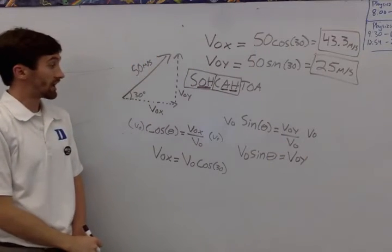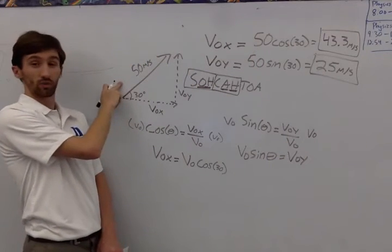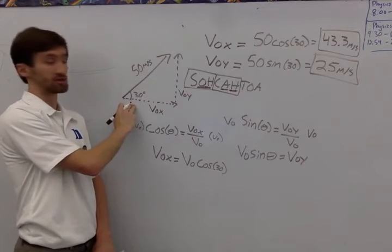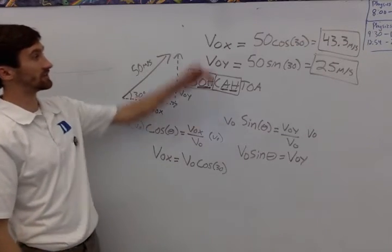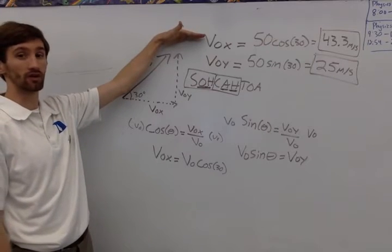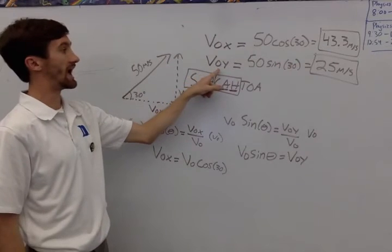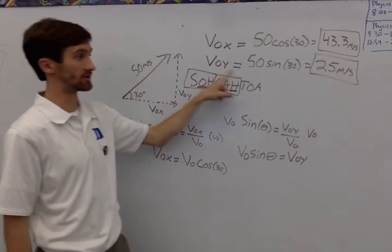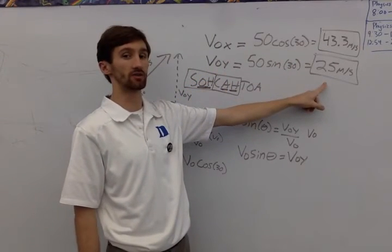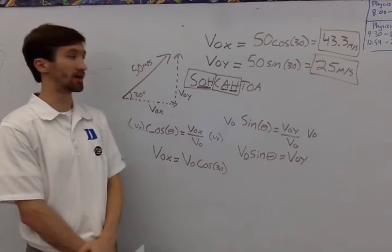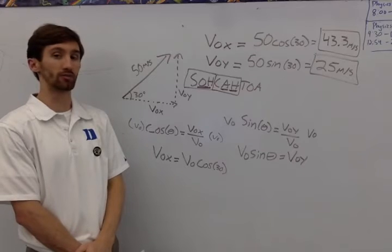So this object that gets launched with an initial velocity of 50 meters per second at an angle of 30 degrees has an initial x component of velocity of 43.3 meters per second and a y component of velocity of 25 meters per second. From here, you should be able to use the OK-team method and solve the rest of the problem.